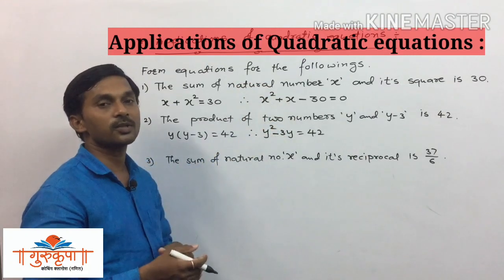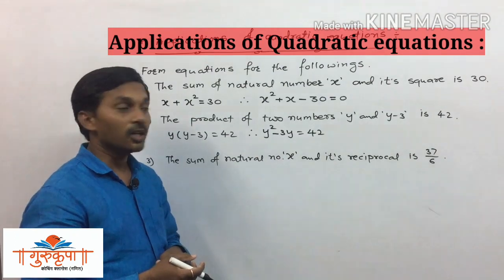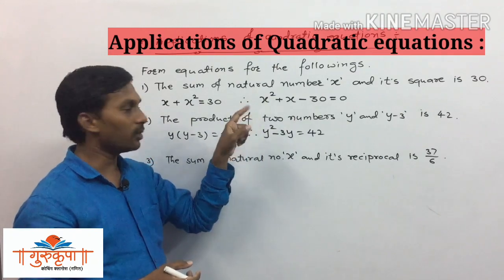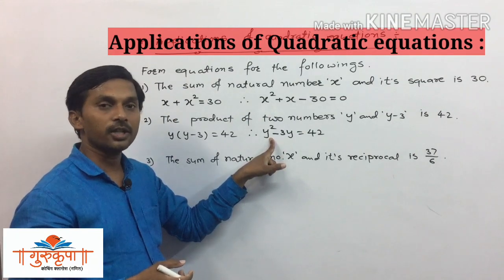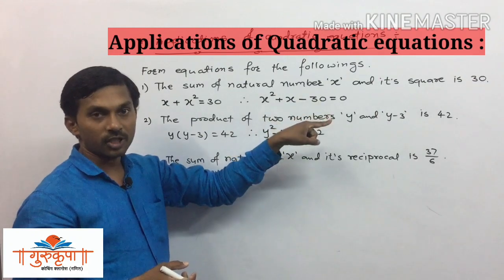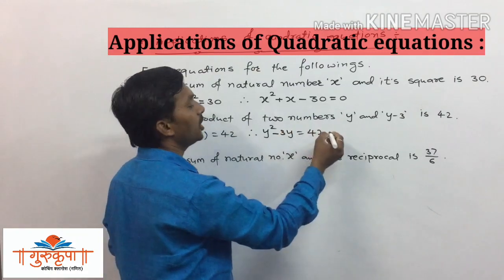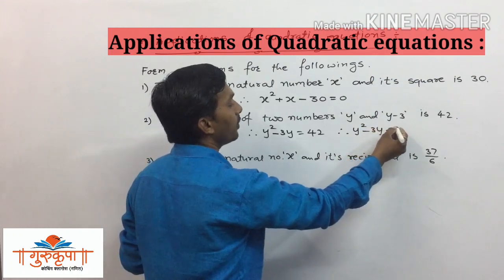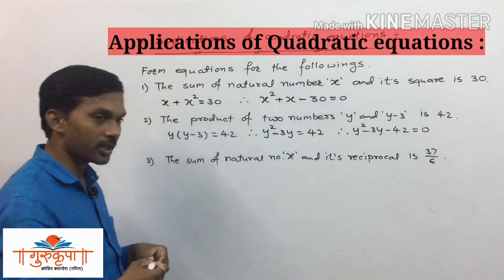It is very important to write the obtained quadratic equation in standard form: ax² + bx + c = 0. Standard form means arranging terms by descending index — power 2 first, then power 1, then the constant term. Transferring 42 to the left side gives us y² - 3y - 42 = 0, which is the required quadratic equation.